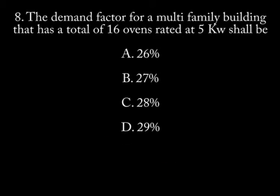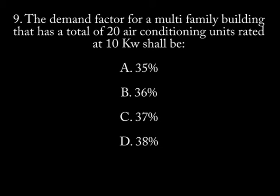Number 8. The demand factor for a multi-family building that has a total of 16 ovens rated at 5 kilowatts shall be: A. 35%, B. 27%, C. 28%, D. 29%.